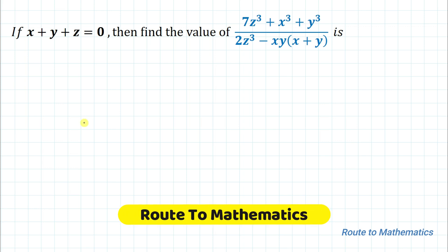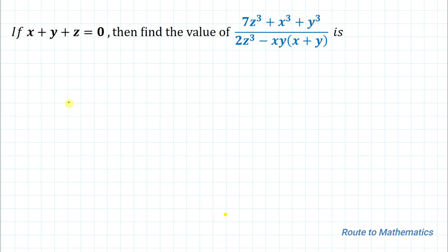Hello everyone, welcome to Root to Mathematics. In this video we're going to solve an interesting algebraic problem. The given problem is: if x + y + z = 0, then find the value of (7z³ + x³ + y³) divided by (2z³ − xy(x + y)). We are asked to find the value of this given expression.